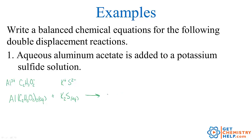Now we predict our products. The wrong way is to keep the same ratio as the ions originally had — you have to figure it out based on the charges. Aluminum now partners with sulfide: Al3+ combining with S2− gives Al2S3. All sulfides are solids except a few exceptions, and aluminum is not one of those, so this is a solid. Then potassium combines with acetate: K+ and acetate− gives KC2H3O2. All potassium-containing and all acetate-containing compounds are soluble, so this is aqueous.